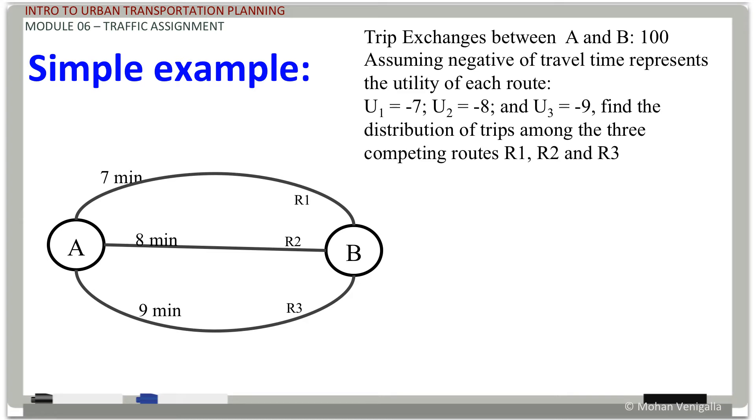Here's a simple example. It will be three routes, seven minutes, eight minutes, nine minutes travel times, route 1, route 2, route 3. And the simplistic assumption will be U1, utility of route 1, is negative of its travel time. Why we are putting a negative value? That's because it's a measure of disutility. The higher the value, it's more penalized. So if you put a negative value, it is indicative of disutility.